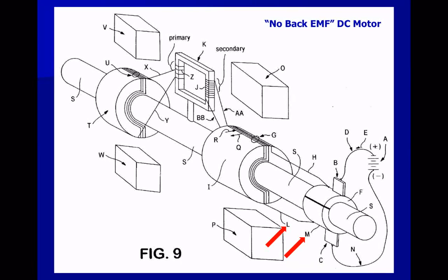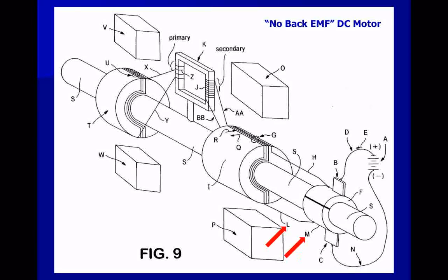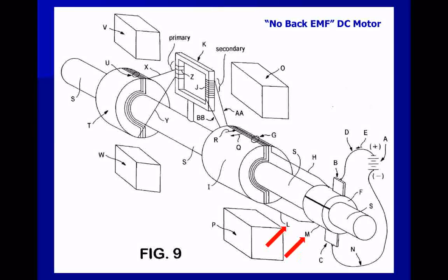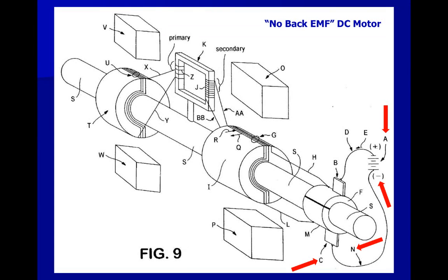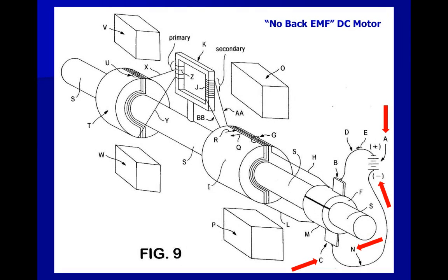After the current has traveled through all alpha turns of the main armature winding G — which includes traveling through conductors AA, J, and BB — it travels through conductor L to commutator segment M. The current then exits commutator segment M, enters brush C, and travels through conductor N to the negative side of DC source A.